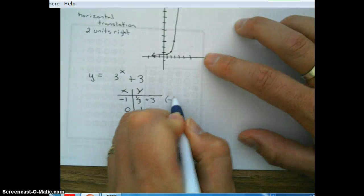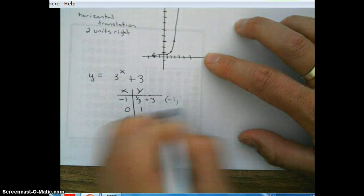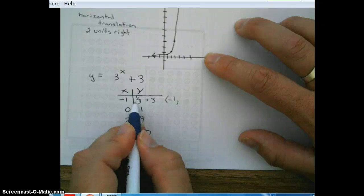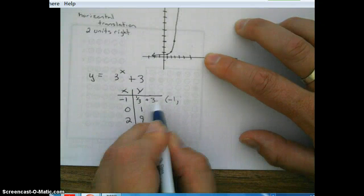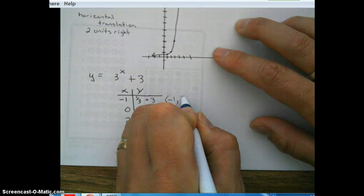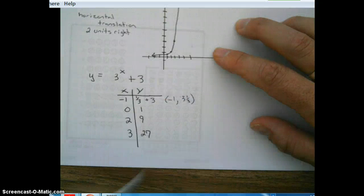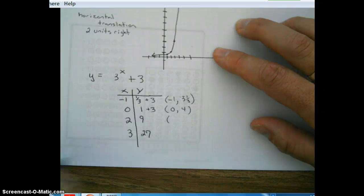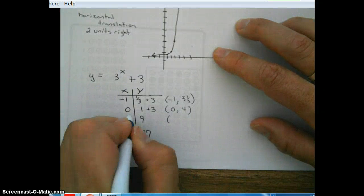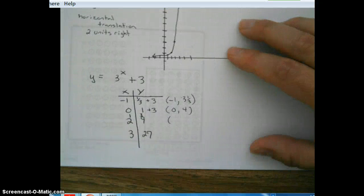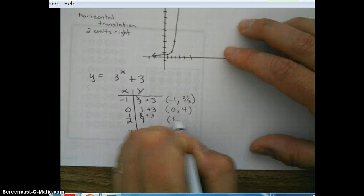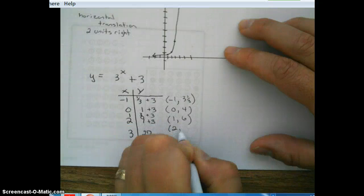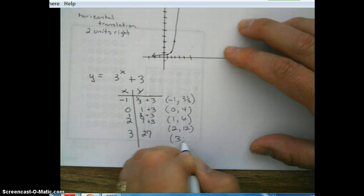Okay, the y's are getting moved 3 units up. So it's going to be add 3. So we're going to have negative 1 comma 4 thirds. See, 3 and a third, which is actually not 4 thirds. 3 and a third is 10 thirds. I'll just put 3 and a third. Make it easy. We're moving 3 units up. So 0, 4. Oh, I missed 1. Sorry about that. Missed 1, 3. Plus 3. It's going to be 1, 6. 2, 12, 3, 30.